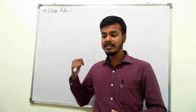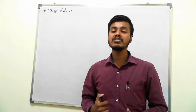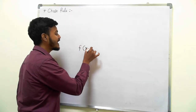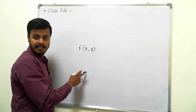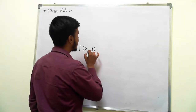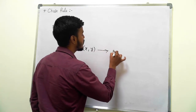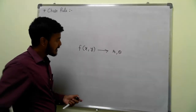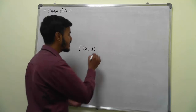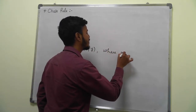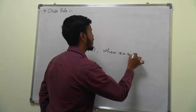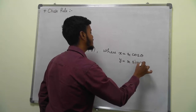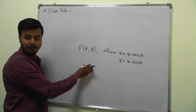Let us see one simple example where you can use the chain rule. For example, f is a function of x and y, and x and y are functions of r and theta — that is, x equals r·cos(theta) and y equals r·sin(theta). Suppose this type of problem is given.